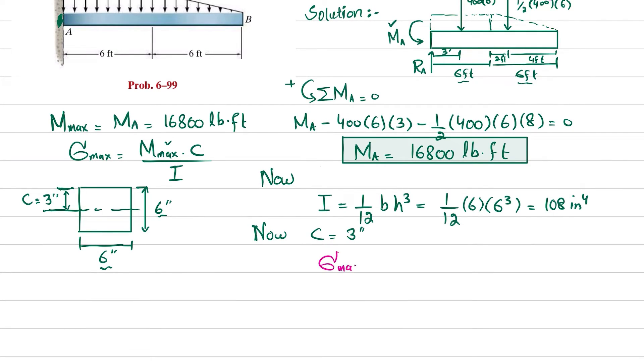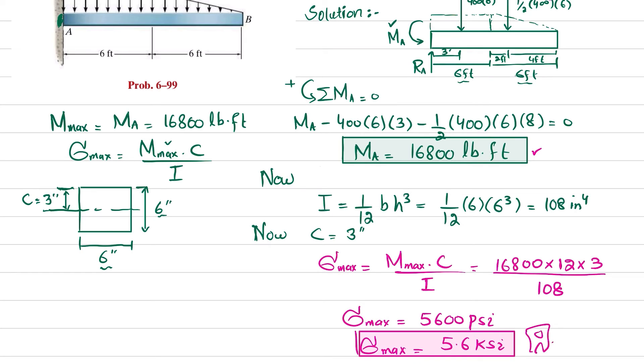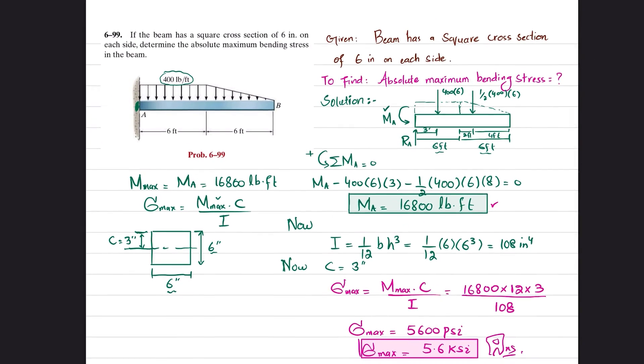Now we have all the values. Sigma max equals maximum bending moment times c divided by I. Maximum bending moment is 16,800 pound-feet. Converting to pound-inches, multiply by 12, then multiply by c, which is 3, divided by I, which is 108. After calculation, sigma max comes out to be 5,600 psi. This is the answer for Problem 6-99.